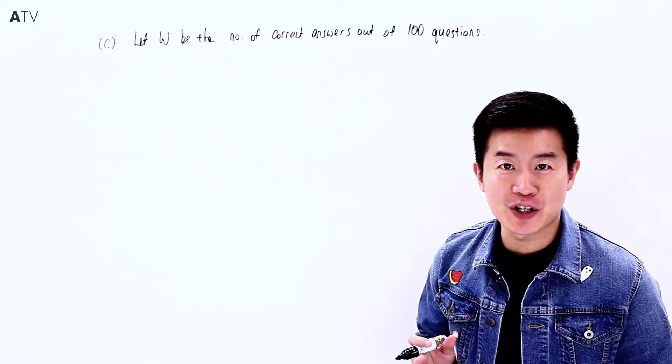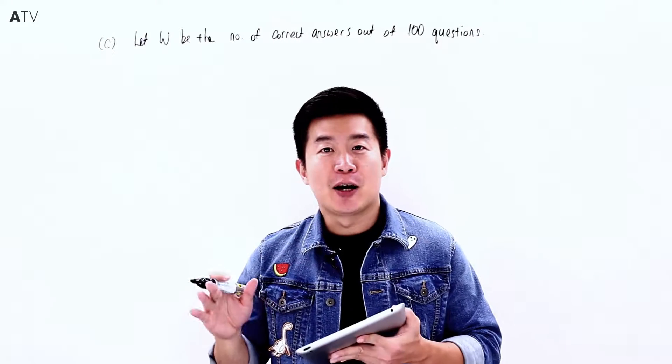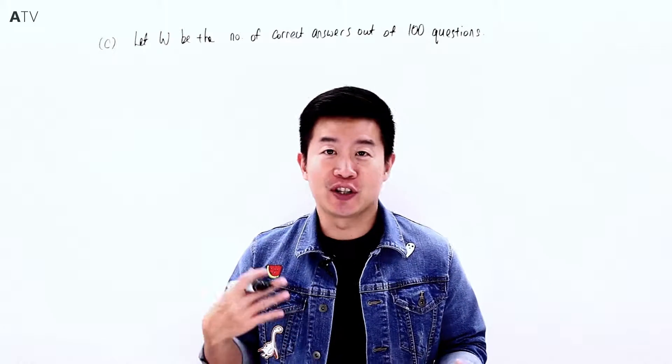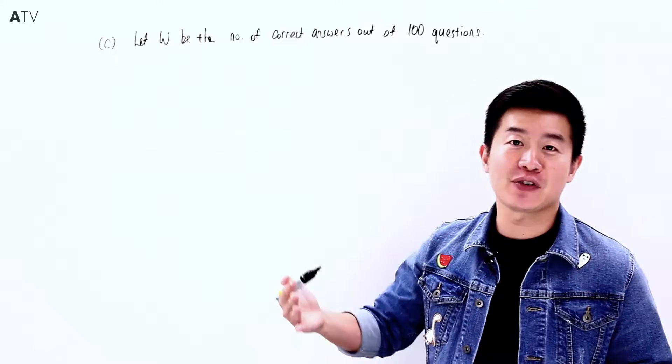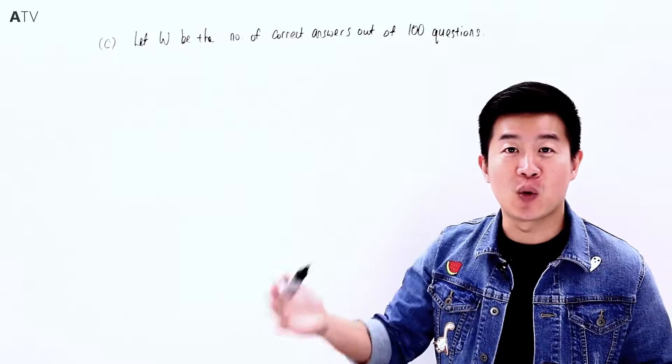George faces 100 questions, each with three options. He decides to do pure guesswork, which means the probability of getting each question correct is 1/3.